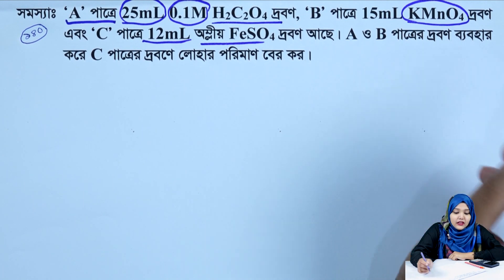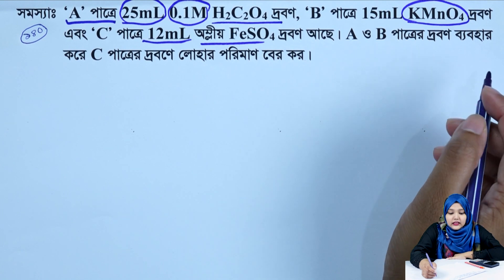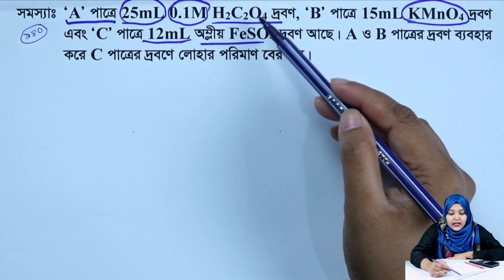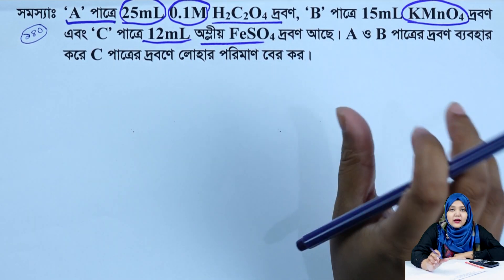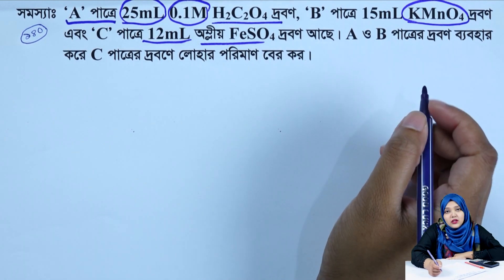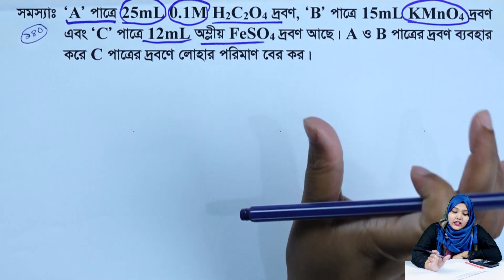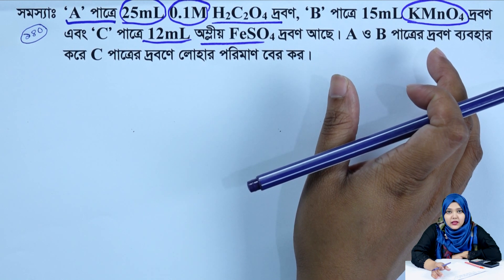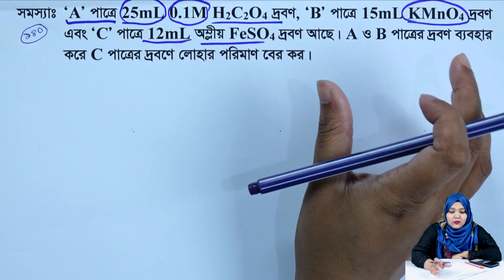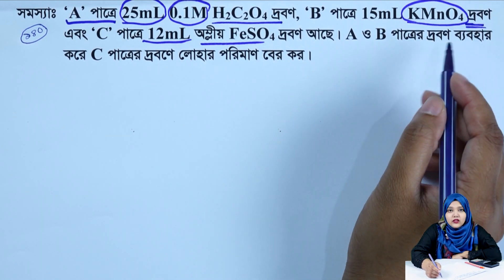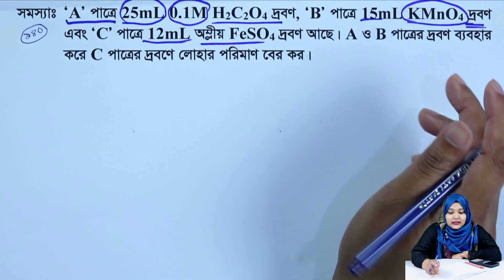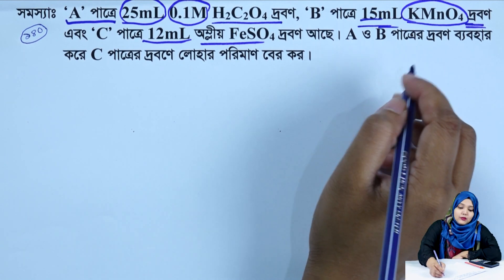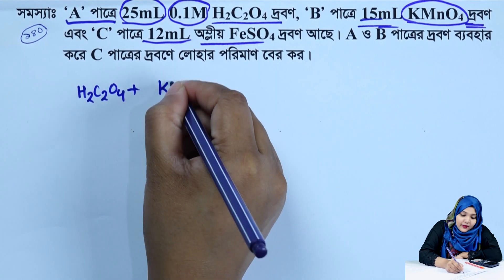So we are going to use the ferrous sulfate, iron, and potassium permanganate. We are also going to use oxalic acid, potassium permanganate, and sulfuric acid. With the oxalic acid, the products include carbon dioxide. This potassium permanganate is very important.